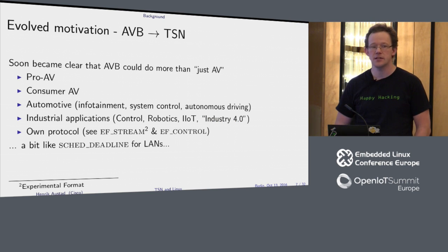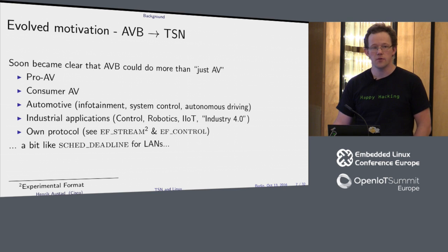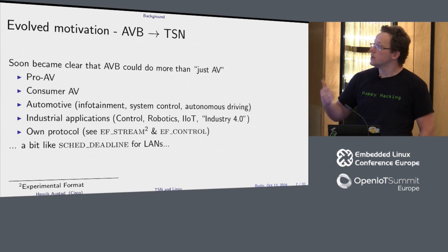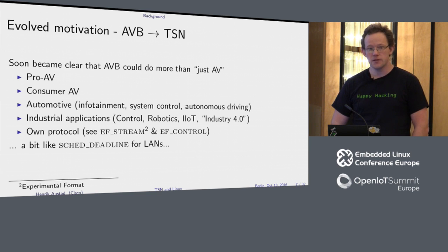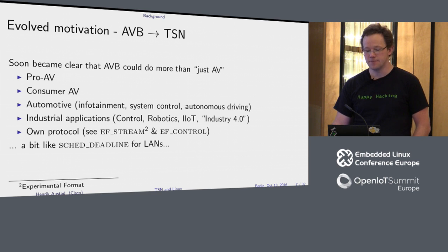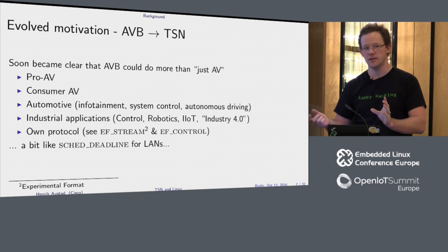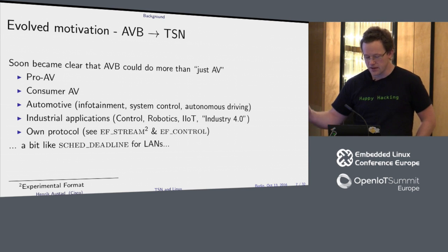AVB then moved on to TSN when they realized it could do more than just audio and video. From pretty much day one, people started using it for more than audio anyway — I think Atmel early on had a demo about using AVB to control a servo with a gyroscope. Now they've been looking into consumer AV as well, and the automotive industry is interested. Then you have the whole industrial application with industrial IoT, control, robotics — all the parts that actually need time-sensitive protection on the streams. If you attended Steven Rostad's talk about deadline scheduling this morning, what you do underneath is a bit like the deadline scheduler — you pace it out evenly.